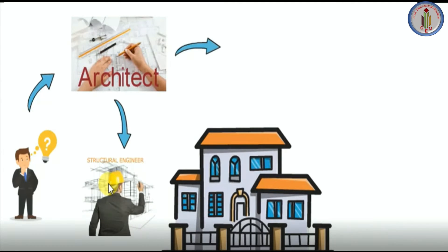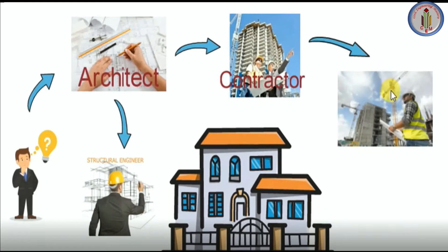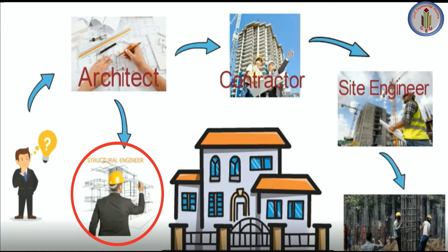The plans then come to the structural engineer to finalize the structural drawings, and then go to the contractor. The contractor assigns a site engineer to execute the work. The site engineer educates the labor to get the work done as per architectural and structural drawings. Architectural drawings are mainly responsible for how the building will look from inside and outside, whereas structural drawings focus on the skeletal aspect and stability of the building.